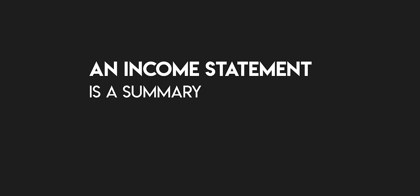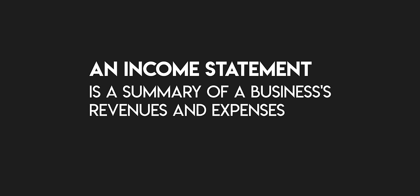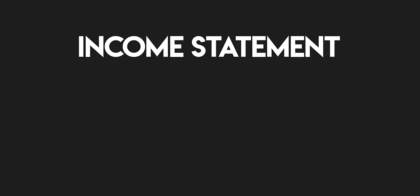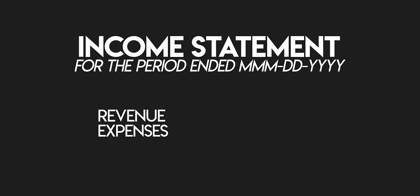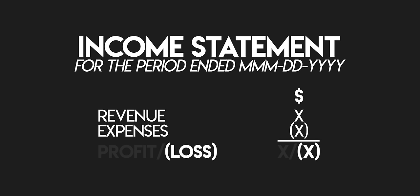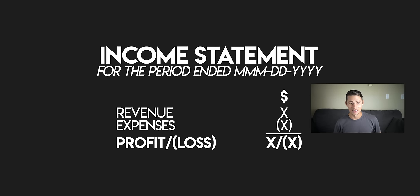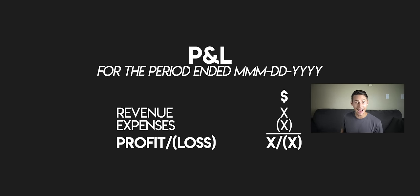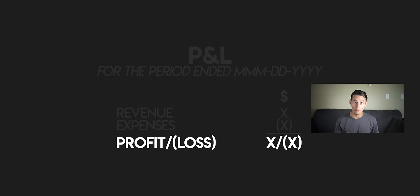An income statement is the summary of a business's revenues and expenses over a period of time. When we take our total revenue and subtract our expenses from it, we work out our profit or our loss. We make a profit when our revenues exceed our expenses, and on the flip side we make a loss when our expenses are more than the income we've earned. This is why the income statement is also known as the profit and loss statement or the P&L for short.